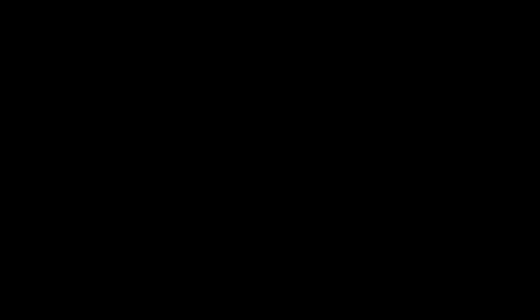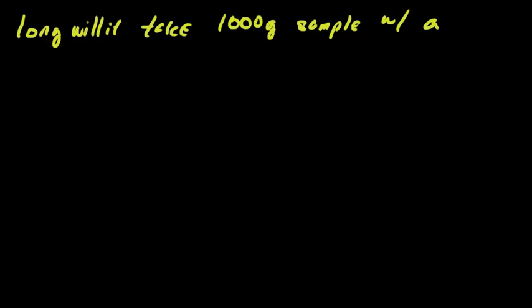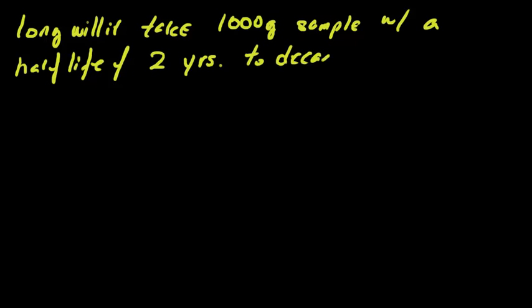So let's try another problem that asks us to identify something different. So the question is, how long will it take for a 1,000 gram sample with a half-life of two years to decay to 62 grams? And this question seems really complicated, but we follow the same format. So originally, we started with 1,000 grams.